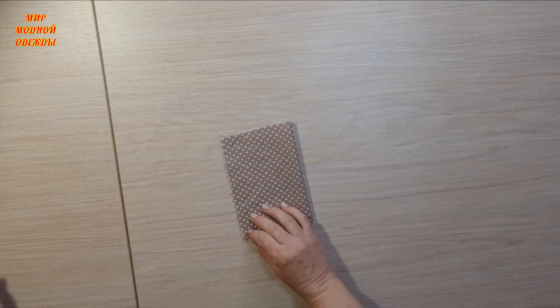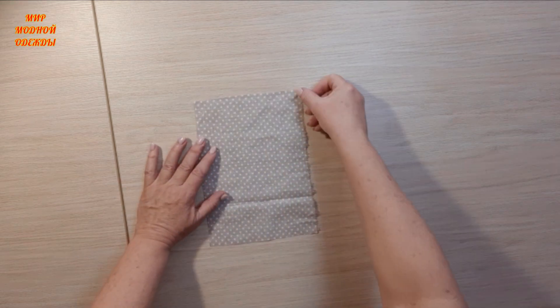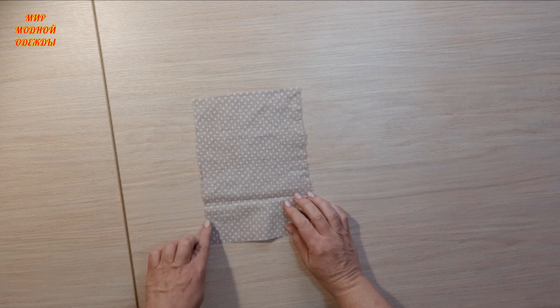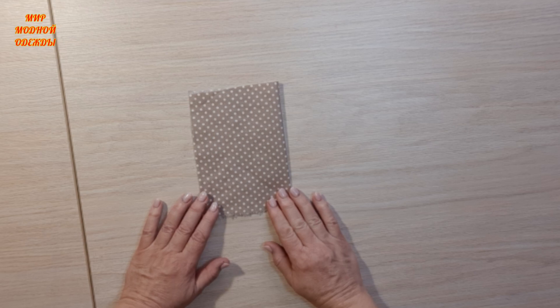Now we will sew a duvet cover. Cutting. The cutting layout has the selvage here and here. And the blanket is oriented this way.